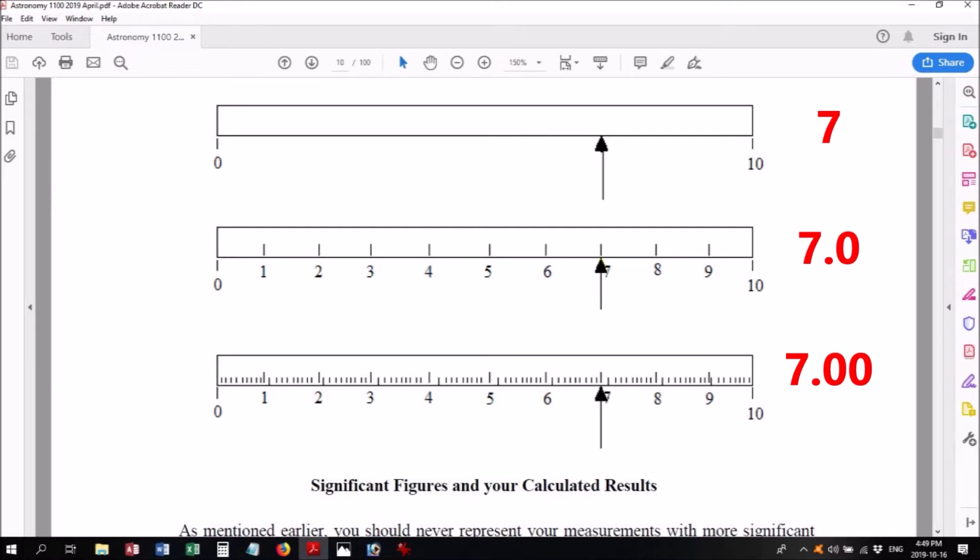Here are three scales where we've written down the pointer position to the correct precision, so everything we could read off the scale plus one estimated digit. Now all of these numbers that we've written down are called significant figures, meaning that they're scientifically significant and were based on an observation.